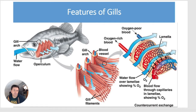Blood flows from the capillaries from deoxygenated to oxygenated — from oxygen-poor to oxygen-rich — while water flows in the opposite direction. This is known as counter current exchange, which we'll discuss in a moment.